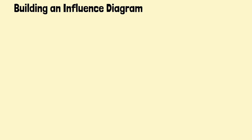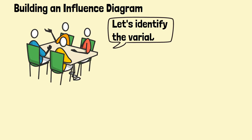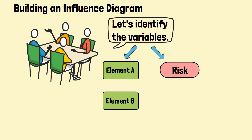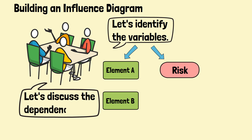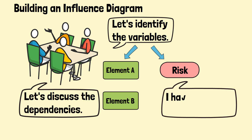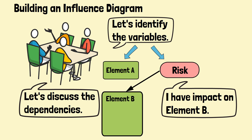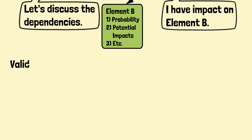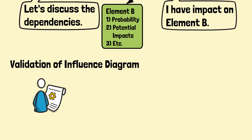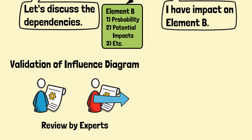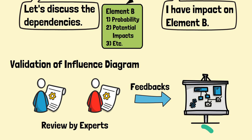Building an influence diagram. To build an influence diagram, we'll need to start by identifying the key variables that can affect the project or decision — these can be critical elements or risks. Next, we'll determine the relationships between these variables. For example, if a delay in one component can affect the completion of another, we can show the dependency by drawing an arrow to indicate the direction of the relationship. Finally, we'll add any additional information such as probability estimates and potential impact. An important step to ensure the diagram is representative is validation, which can be done by inviting experts to review it. Their comments and feedback will usually improve the influence diagram to better represent the risk scenario.